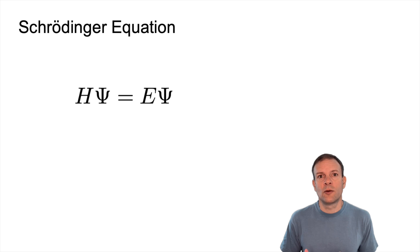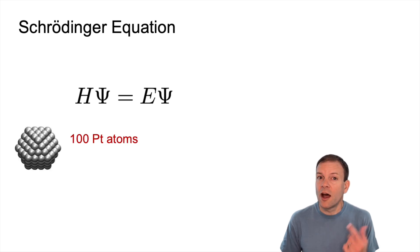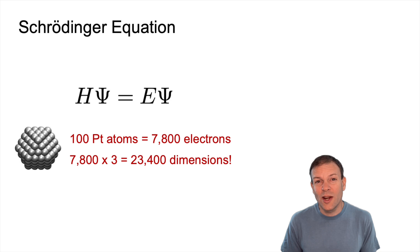It looks like this equation should be fairly easy to solve for, but let's look at a practical problem. Let's say we have 100 platinum atoms. So that's 100 atoms times 78 electrons, and each exists in 3D space. So how many dimensions is that? Well, it's over 23,000.